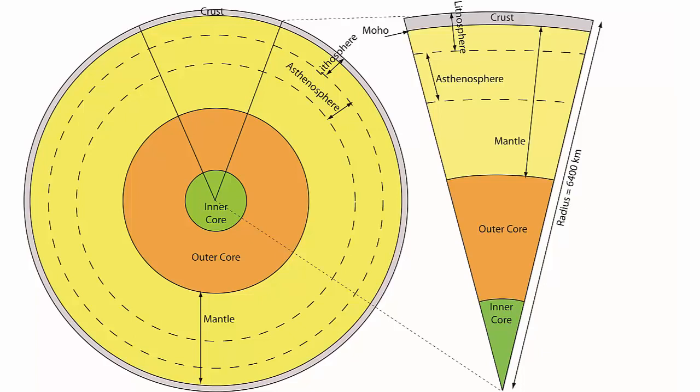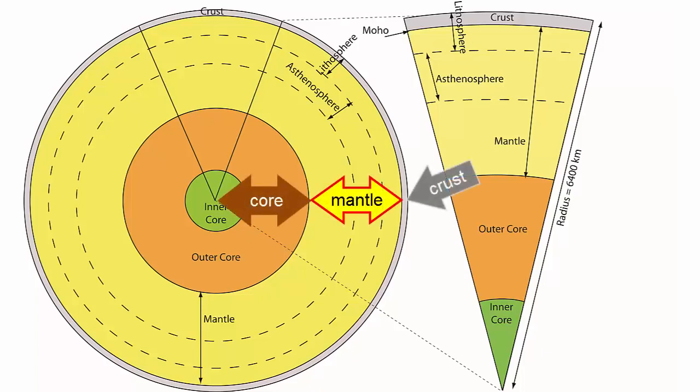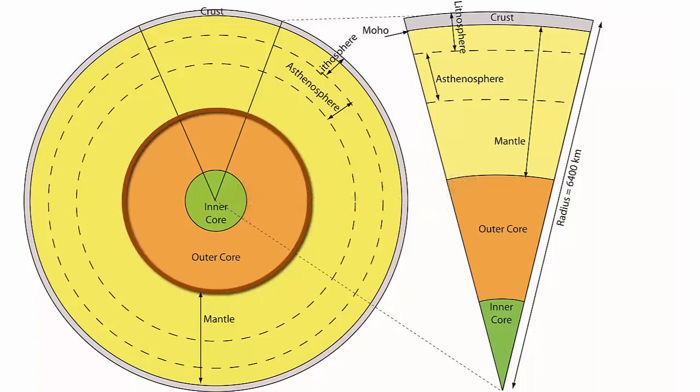First, due to density separation, the core, mantle, and crust — the primary compositional layers — were formed. Let's look closer at the core. It's made mostly of iron and is separated into two physically distinct layers. They are compositionally quite similar, mostly made of iron.